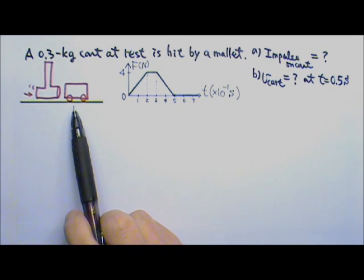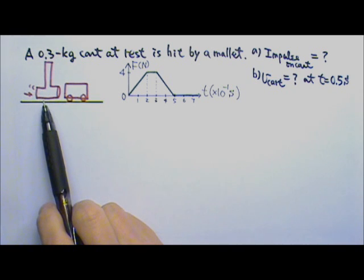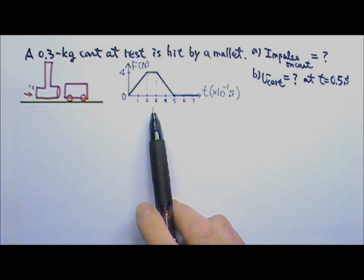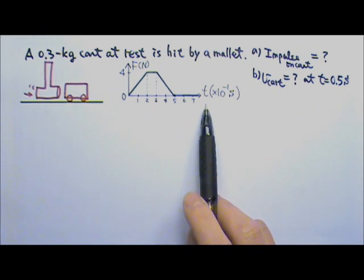A 0.3 kg cart at rest is hit by a mallet. The force on the cart by the mallet is described by this force versus time graph.